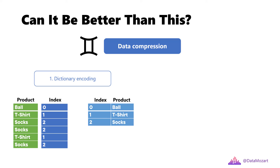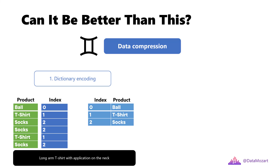And you might think: why this overhead, when product names are quite short? But now imagine that you store the detailed description of the product, such as 'long arm t-shirt with application on the neck'. And now imagine that you have this product sold a million times. Instead of having that long value repeating a million times, Parquet will store only the index value — an integer instead of text. Run length encoding with bit packing: when your data contains many repeating values, the RLE algorithm may bring additional memory savings.